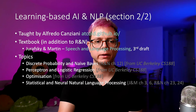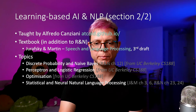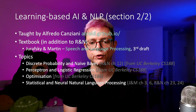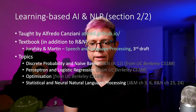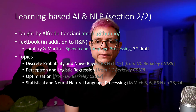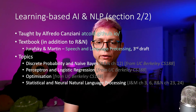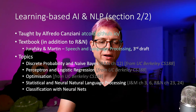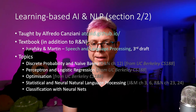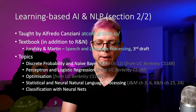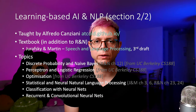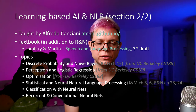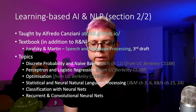Then I went on to Statistical and Neural Natural Language Processing. For that I used Jurafsky and Martin chapters 3 and 6, and Russell and Norvig chapters 23 and 24. Finally, for deep learning, we talked about classification with neural networks, and then, in order to deal with sequences and images, we talked about recurrent and convolutional neural networks.